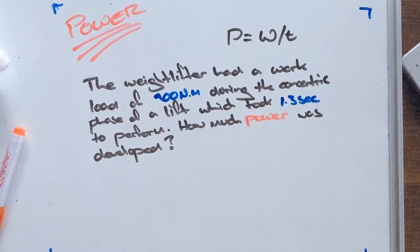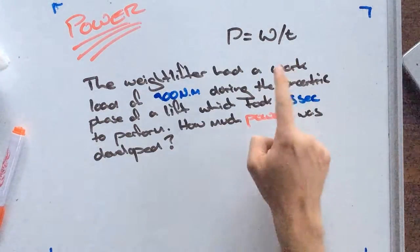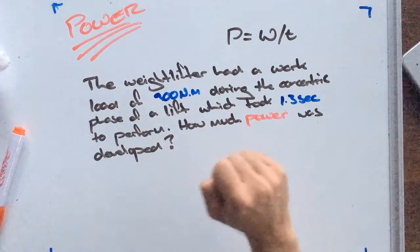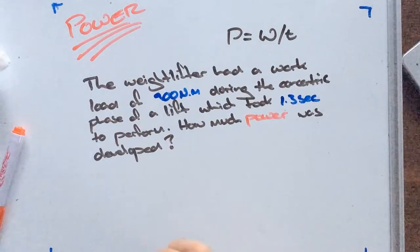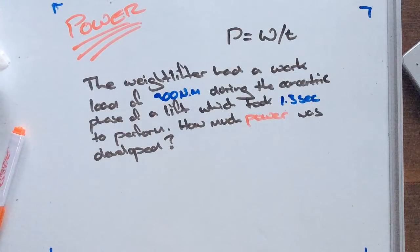Kia ora team. So what we're going to look at now is how to calculate for power. Our formula for power is P is equal to work divided by time. So if we get a question that states: the weightlifter had a workload of 900 Newton meters during the concentric phase of a lift, which took 1.3 seconds to perform, how much power was developed?